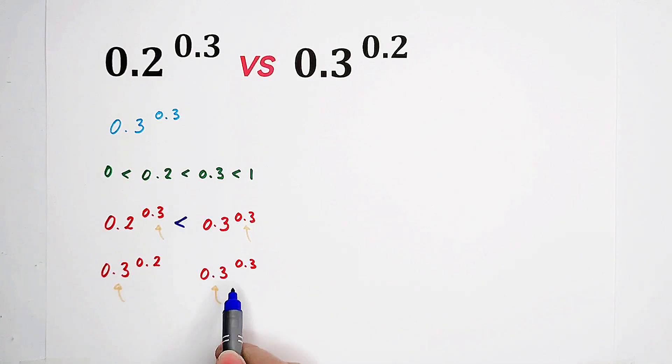So, 0.2 is smaller than 0.3, and this is greater.